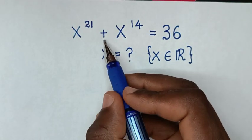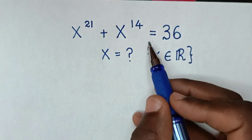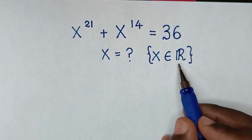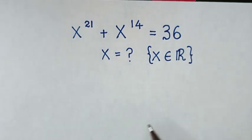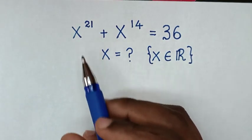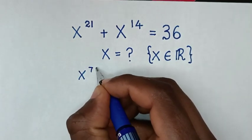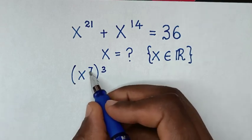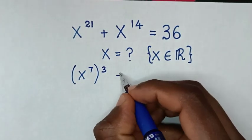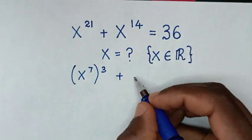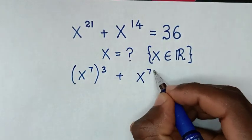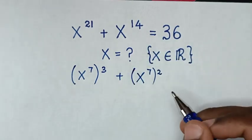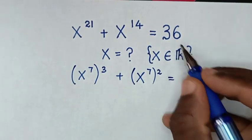How to solve x power of 21 plus x power of 14 is equal to 36, to find the value of x such that x is an element of the real numbers. From here, x power of 21 is the same as x power of 7, bracket power of 3, because 7 times 3 is 21. Then plus x power of 14 is the same as x power of 7, bracket power of 2, since 7 times 2 is 14. This equals 36.